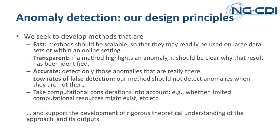Our design principles for methods development are that methods should be fast, transparent, accurate, and take computational realities into account. By fast, I mean scalable — usable on large data sets or in an online setting. Transparent means that if an anomaly is highlighted, it should be clear why that result has been identified. Accurate and low false detection rates — we want to detect anomalies that are really there, but not alert on anomalies that aren't. And even a statistically present anomaly doesn't necessarily mean it's operationally relevant.